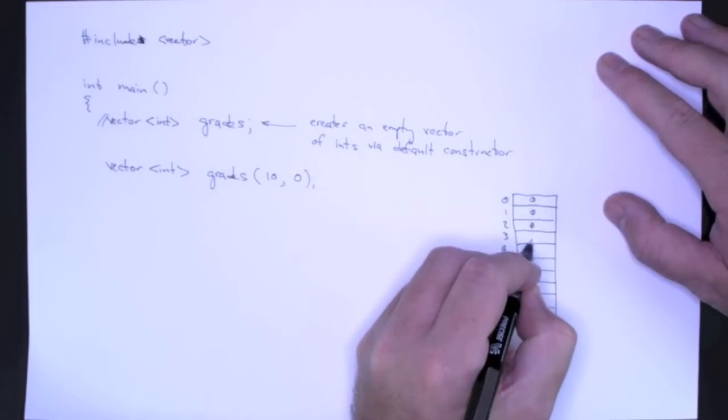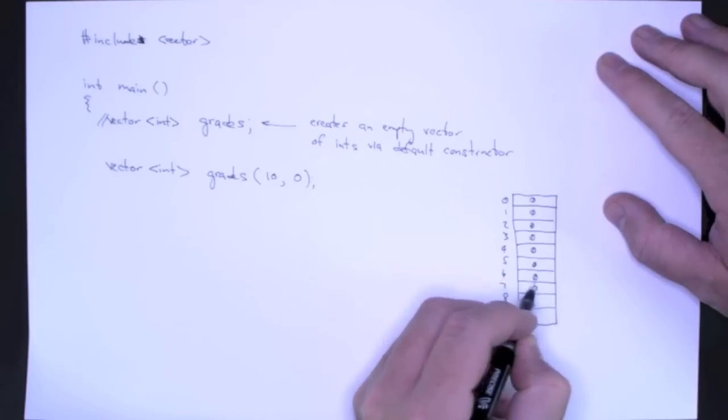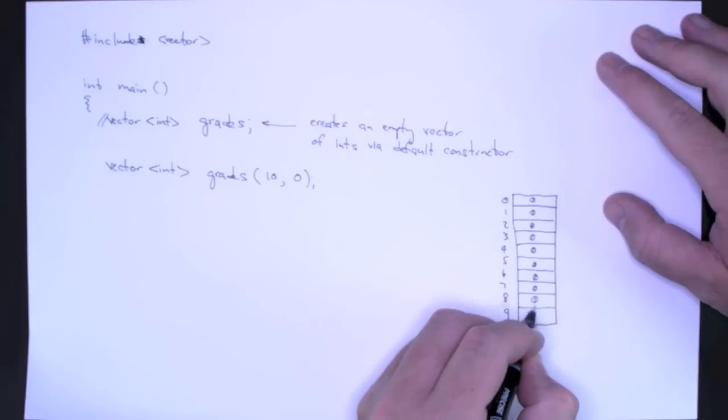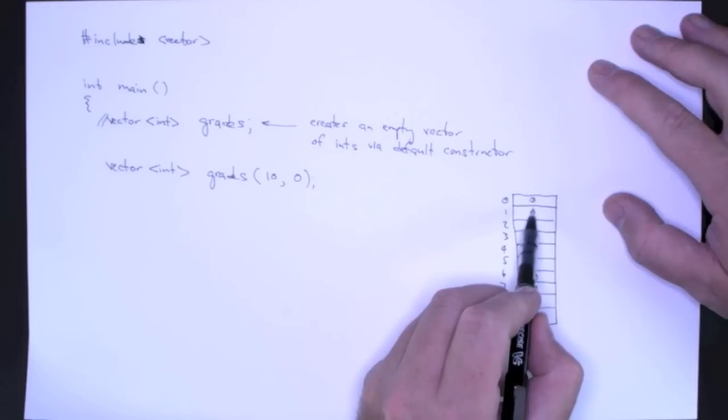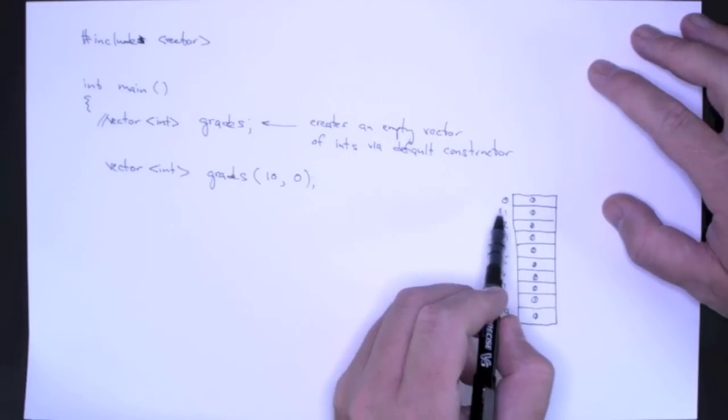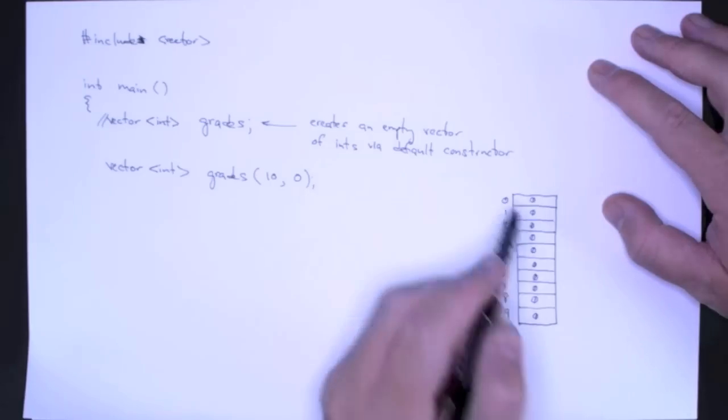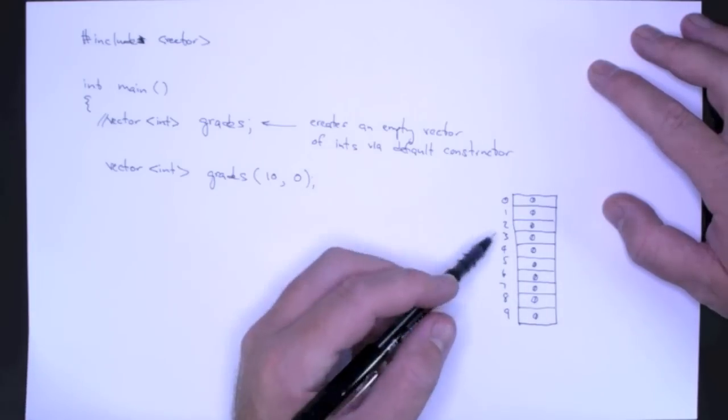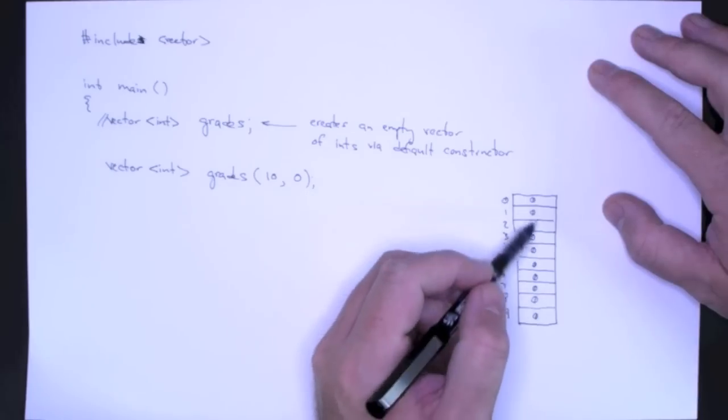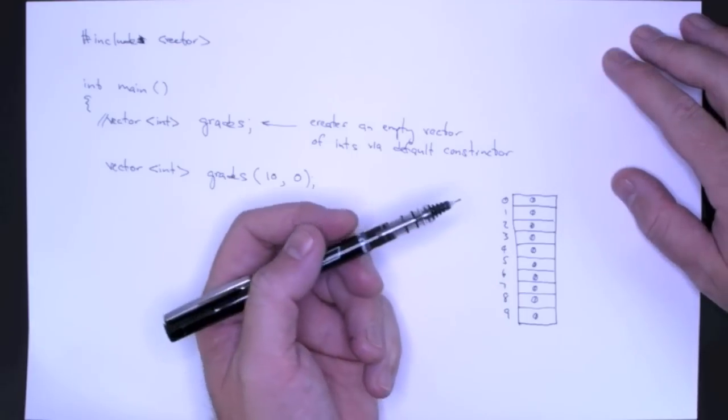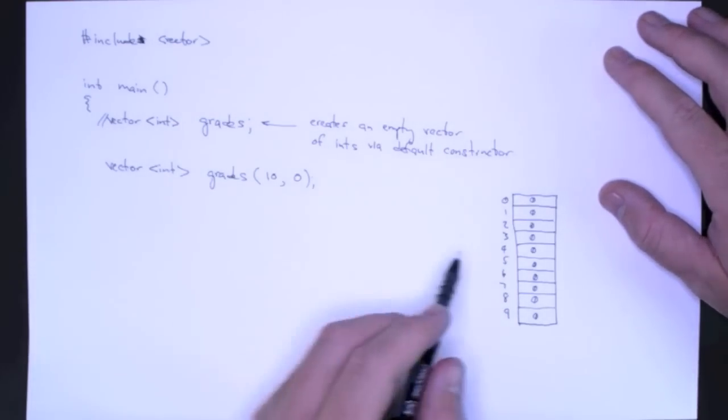And it's important not to get confused. So in this case, these are integers. We could store other objects in here, but don't get confused between the value and the index or the location. Now, in this case, they're both integers or they look like integers, but these values could actually be students or events or dates or times or any kind of an object.